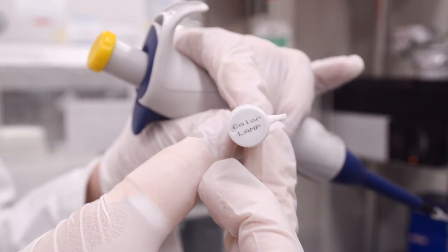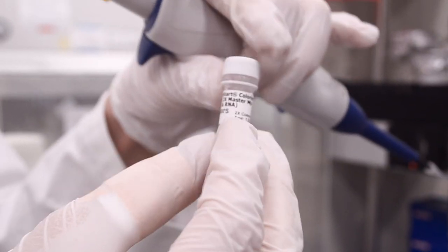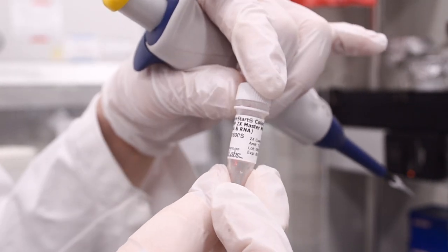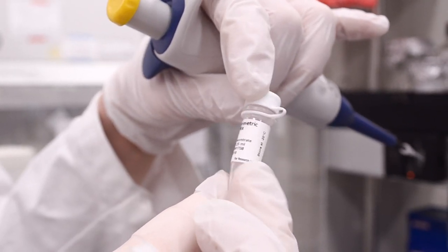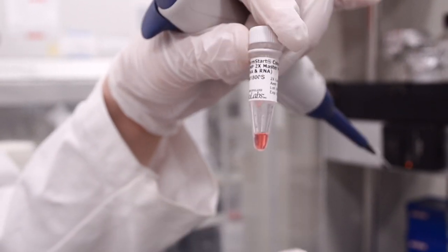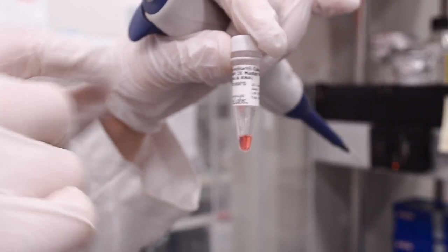The colorimetric Warm Start is not completely thawed, only enough to take out the amount needed. This is because the Warm Start has an enzyme that activates when it's warm. For our reaction to work well, we don't want that enzyme to activate until we get our sample to the heat block.